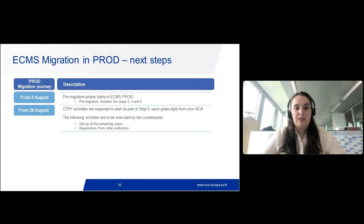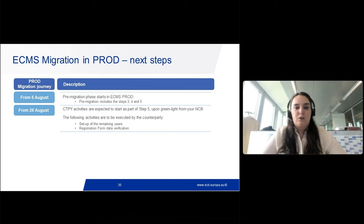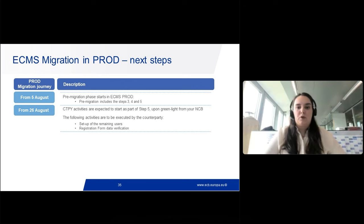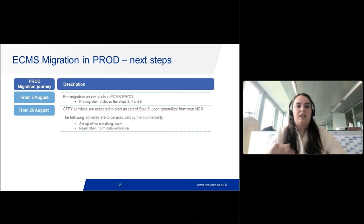All parameter and account creation activities are done by the ECMS operator and the NCB. Step five is more specifically the counterparty-related step: setup of counterparty data such as remaining users. This activity is expected to start on the 26th of August, but upon green light from the NCB. If issues arise during earlier setup stages it could be slightly delayed, which is why the green light system is in place — but the activity is still expected to begin on the 26th of August.